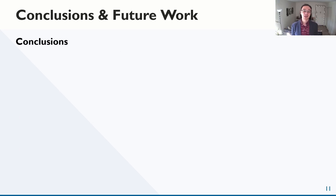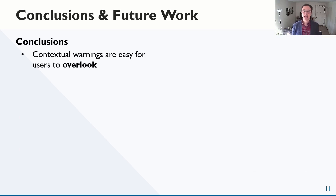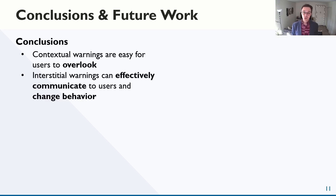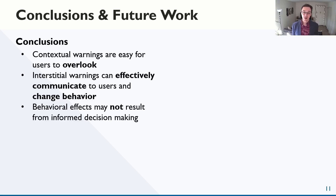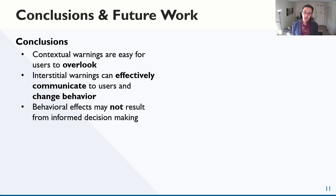We draw three conclusions from our studies. First, contextual warnings, which platforms are currently using widely, are easy for users to overlook and may have minimal effect on behavior. But interstitial warnings can grab user attention, inform them that they're encountering disinformation, and change their behavior. But we also surface a potential dilemma: interstitial warnings might be able to inform users and guide behavior, but the behavioral effects might not result from informed decision-making. This could undermine the rationale for using disinformation warnings, which is that they change user behavior by informing instead of restricting.